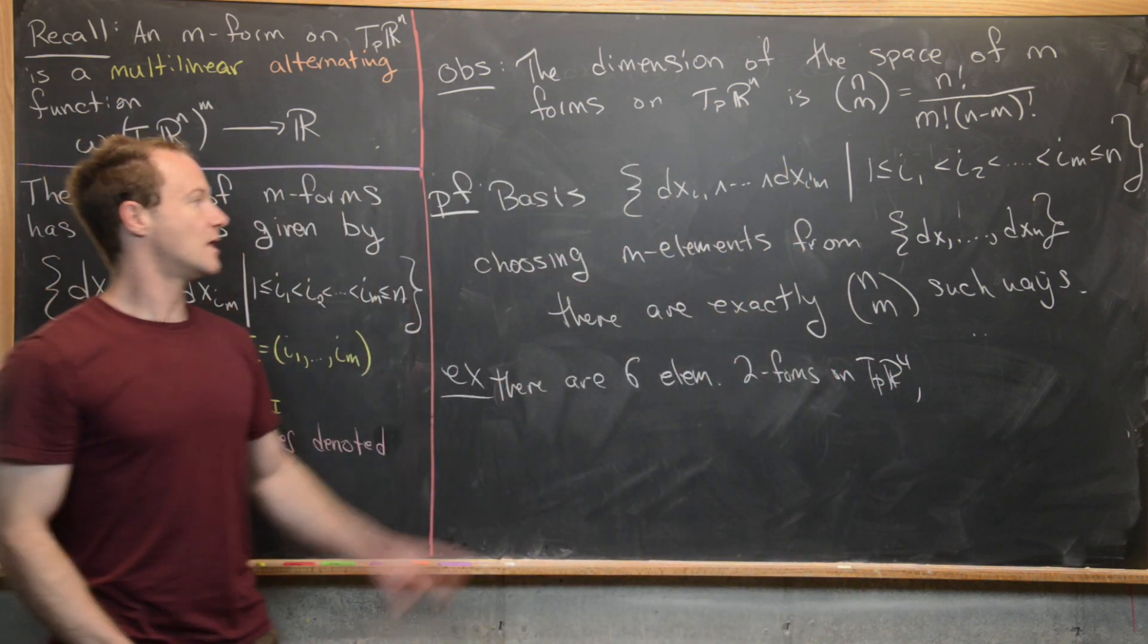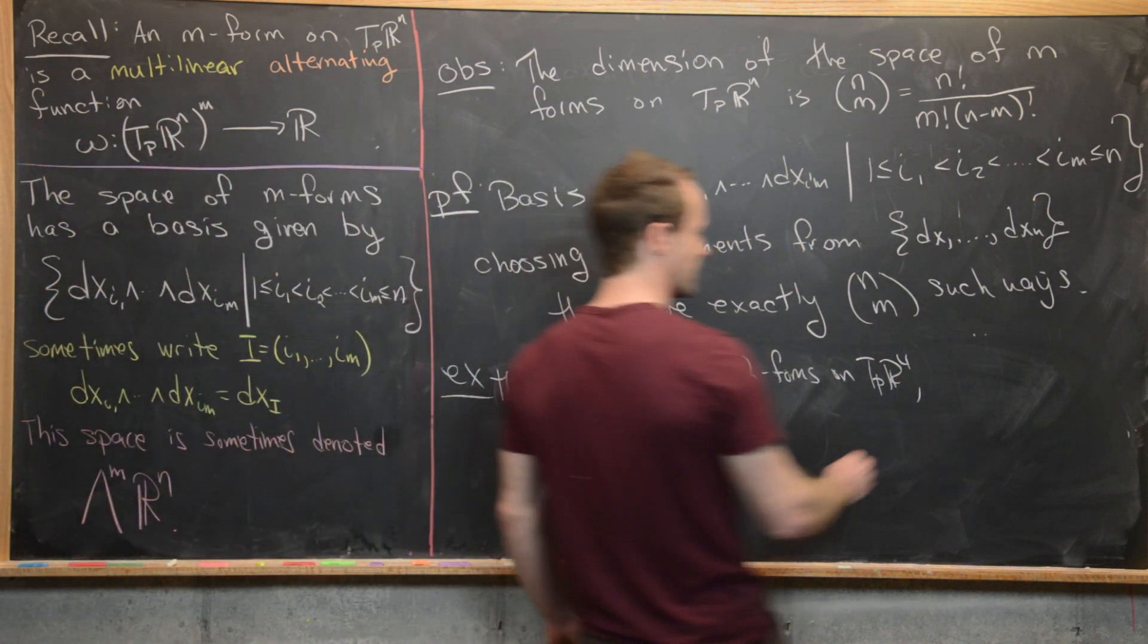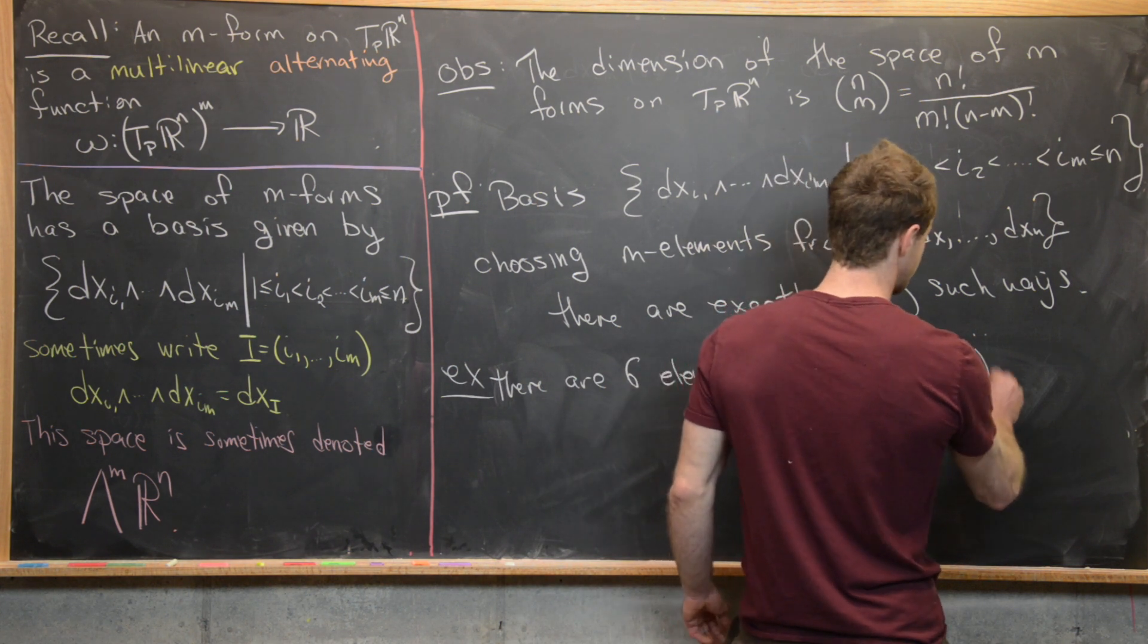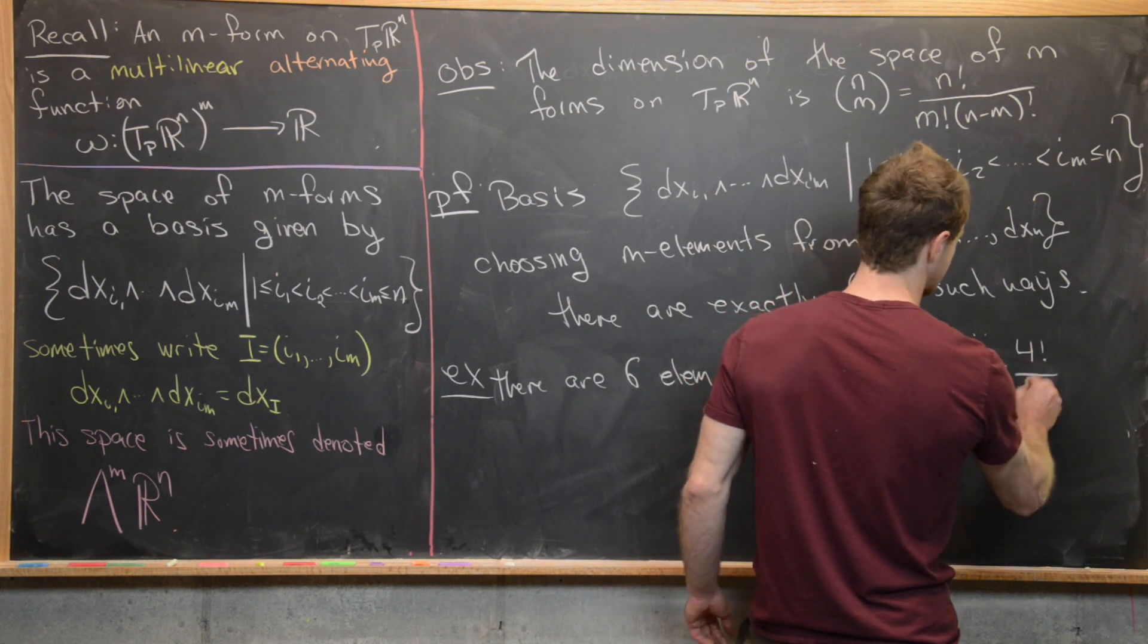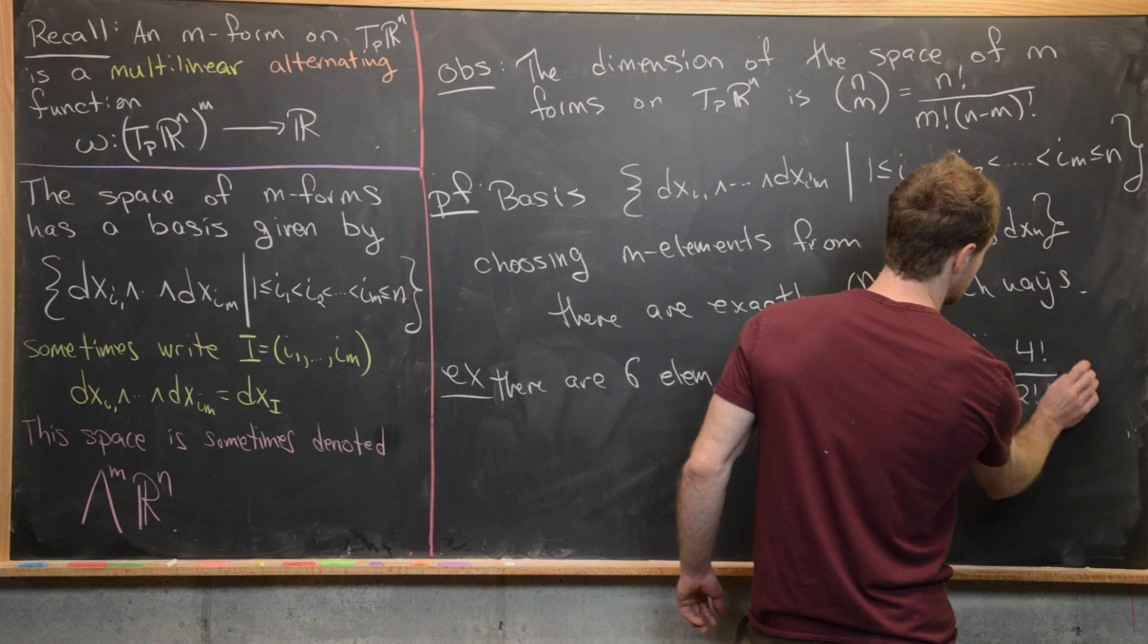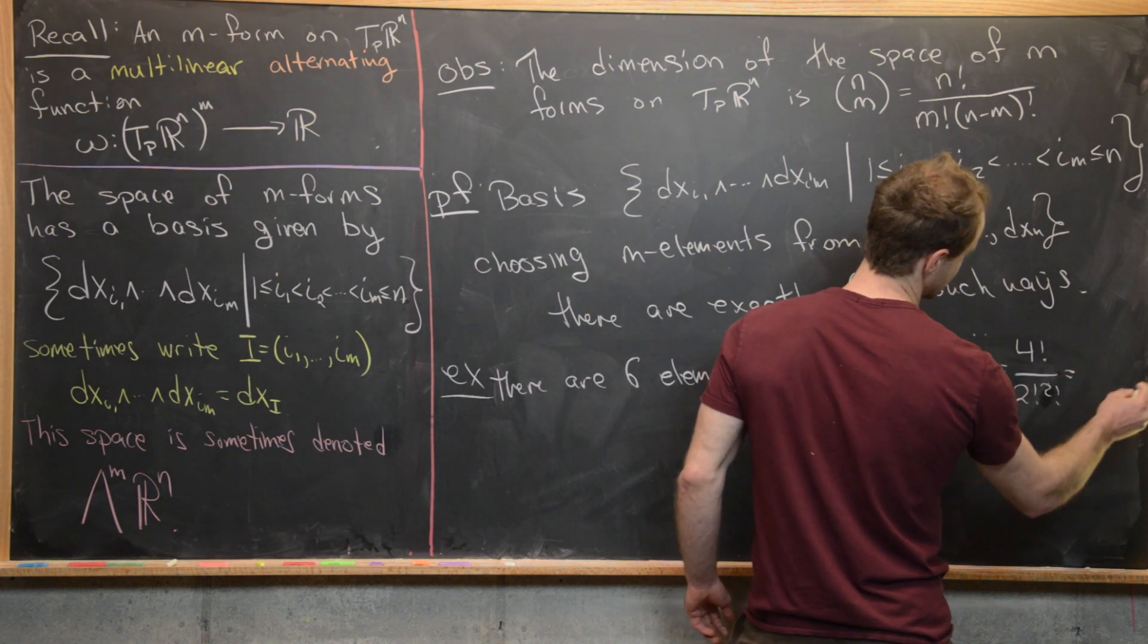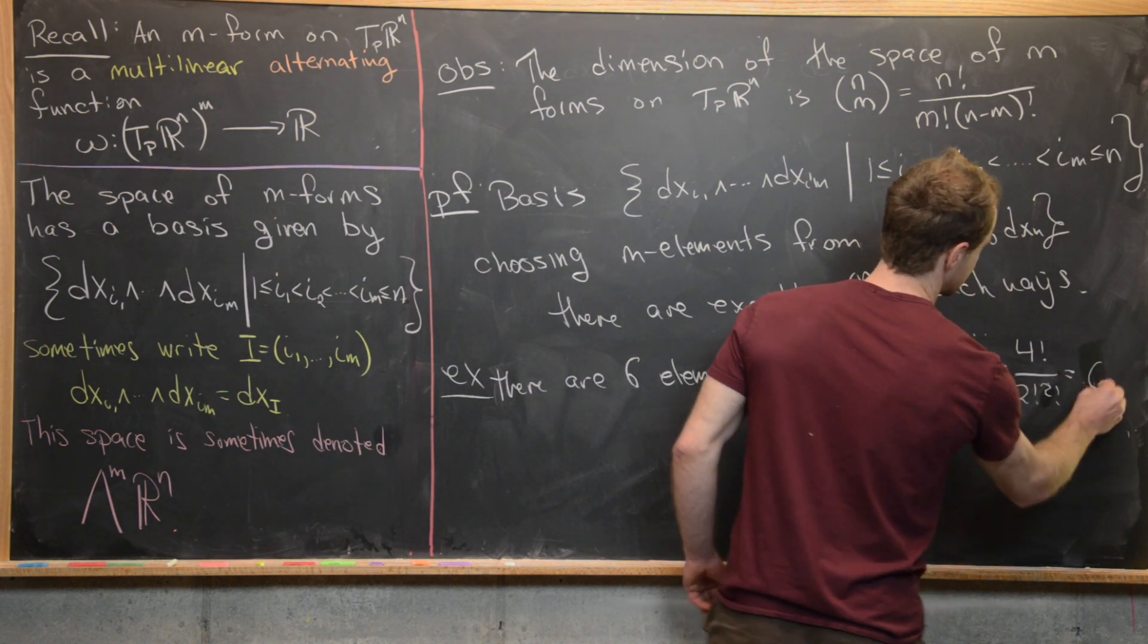And why is that? Well, by this argument, we know that there's exactly 4 choose 2, but 4 choose 2 is 4 factorial over 2 factorial times 2 factorial. But that's 24 over 4, which is 6.